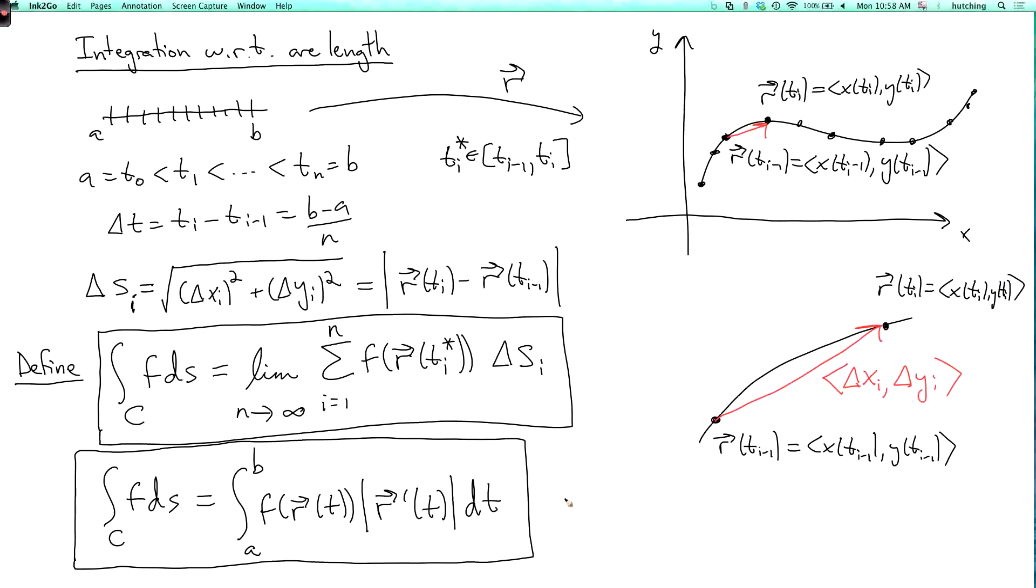So example, we know that if we integrate over c the function 1 with respect to arc length, then we're going to recover the formula we have before for the length of the curve. Because f is going to be equal to 1, this is going to be the square root of x prime squared plus y prime squared. So we're going to get the length of c.